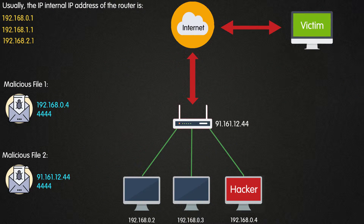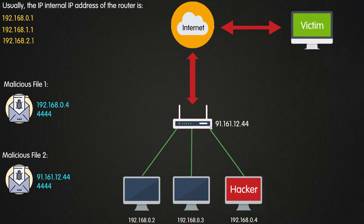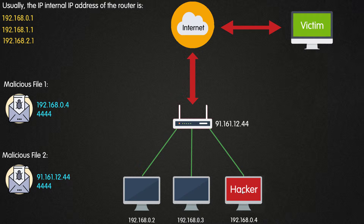Here is a basic illustration: we have three devices connected to one network — the first device, the second one, and the hacker. All are connected to one router. Because the router has NAT enabled, it shares one public IP address to all devices. So whether you check the IP address on device one or on the hacker machine, you get the exact same public IP address.